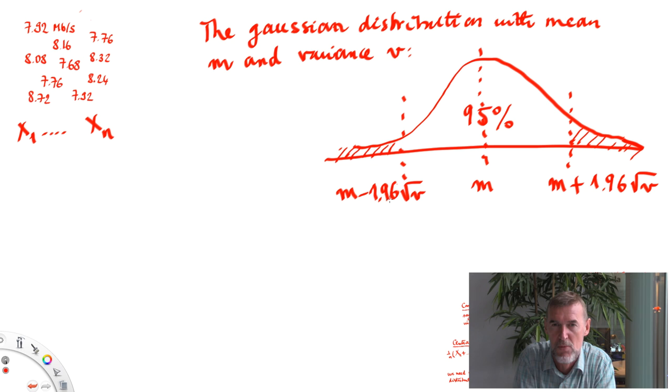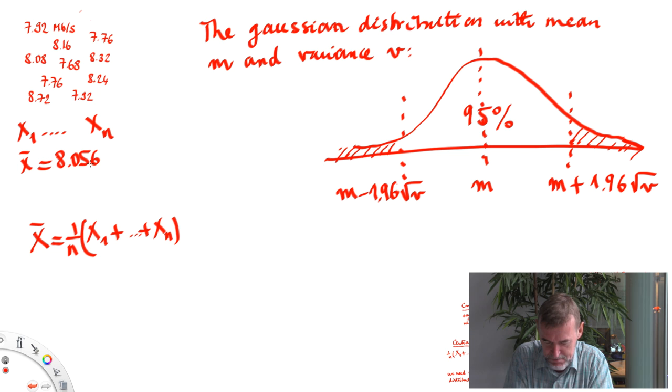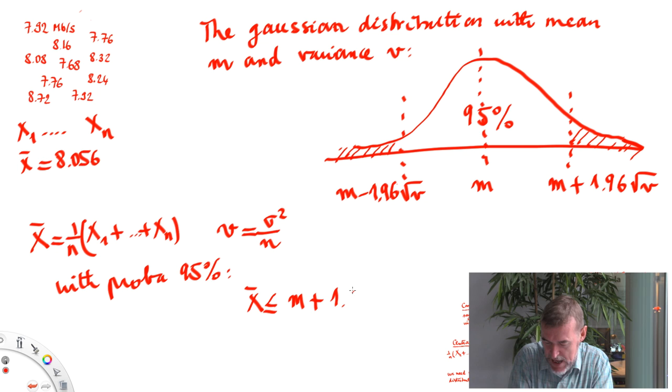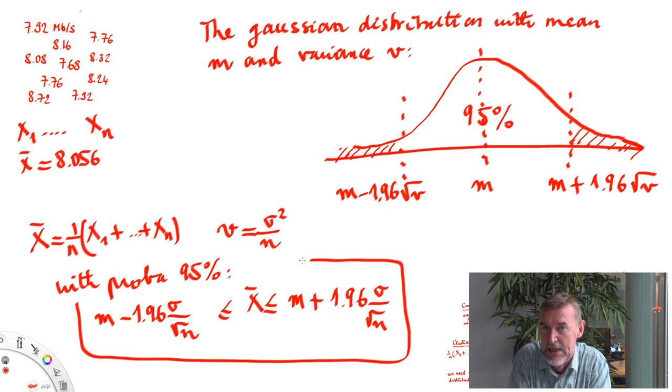Now let's return to our mean x-bar. x-bar, which is 1 over n, x1 plus etc plus xn. The variance of x-bar is sigma square divided by n. So if I apply the bounds I have for the Gaussian distribution, I find that x-bar is between m plus 1.96 sigma divided by square root of n and m minus 1.96 sigma divided by square root of n. And this holds with probability 95%.